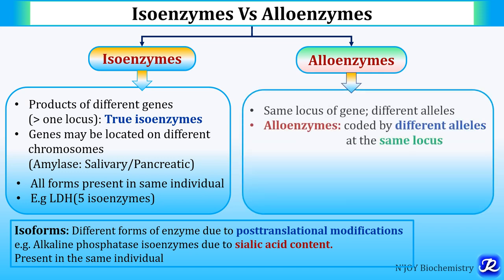Now let's see how alloenzymes are different from isoenzymes. In alloenzymes, there is the same locus of a gene but alleles are different. So alloenzymes are coded by different alleles at the same locus.